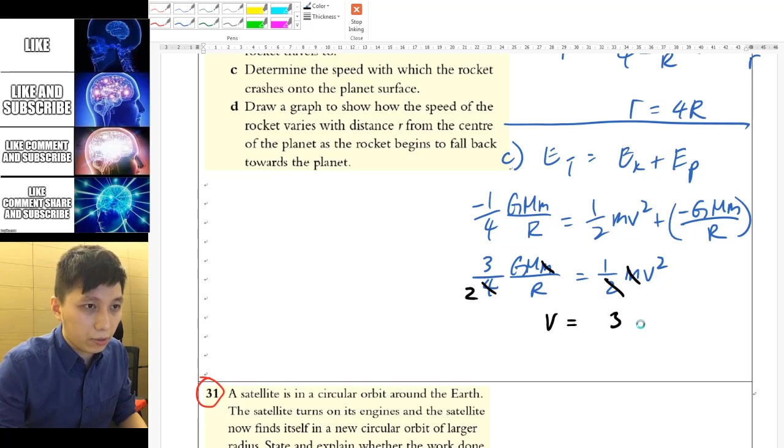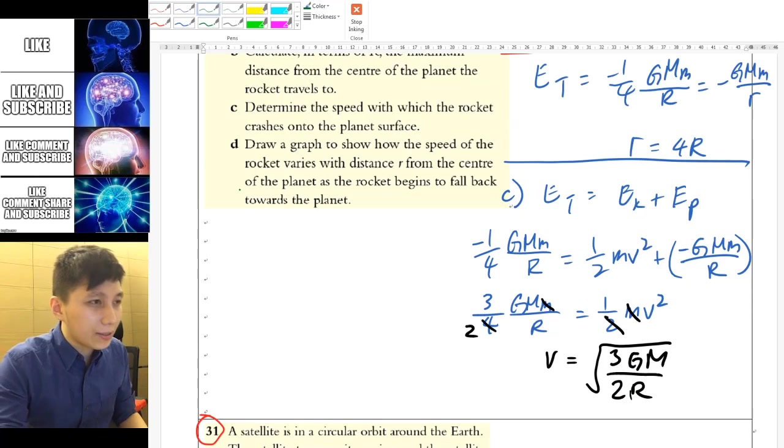We don't because they only mention it's a planet. We can't even assume it's earth and plug in the number. So I guess we can only find out the expression, but not an actual number. So we can just say square root of 3GM over 2R to be the final expression.